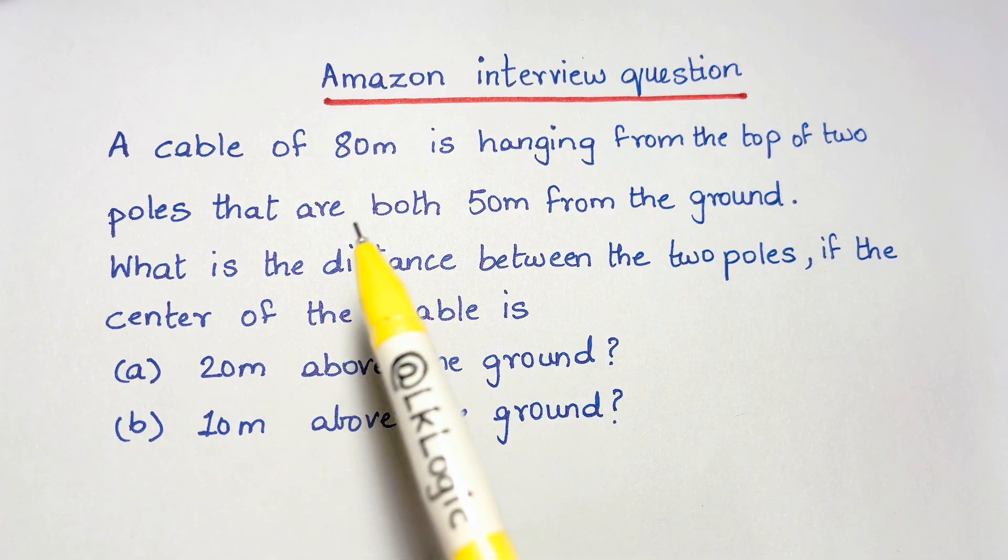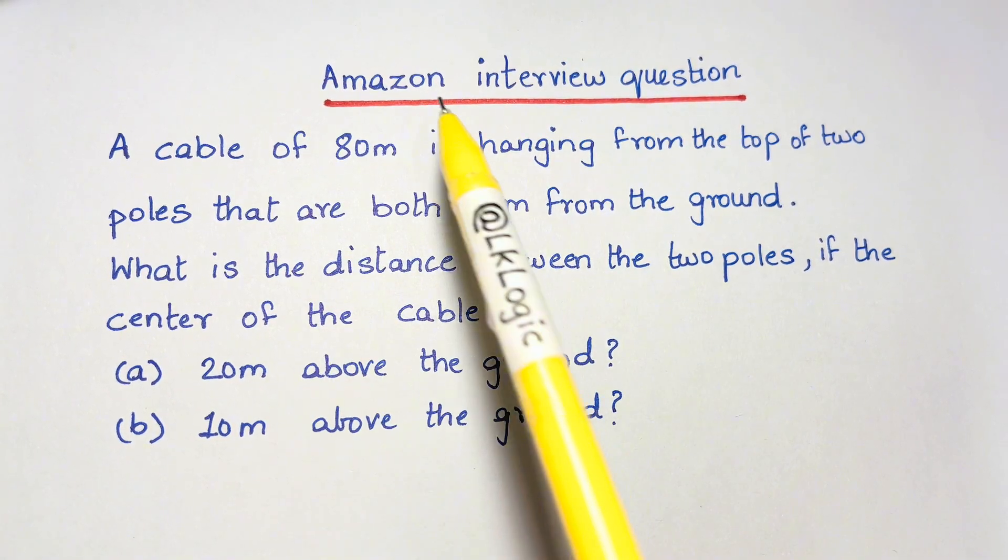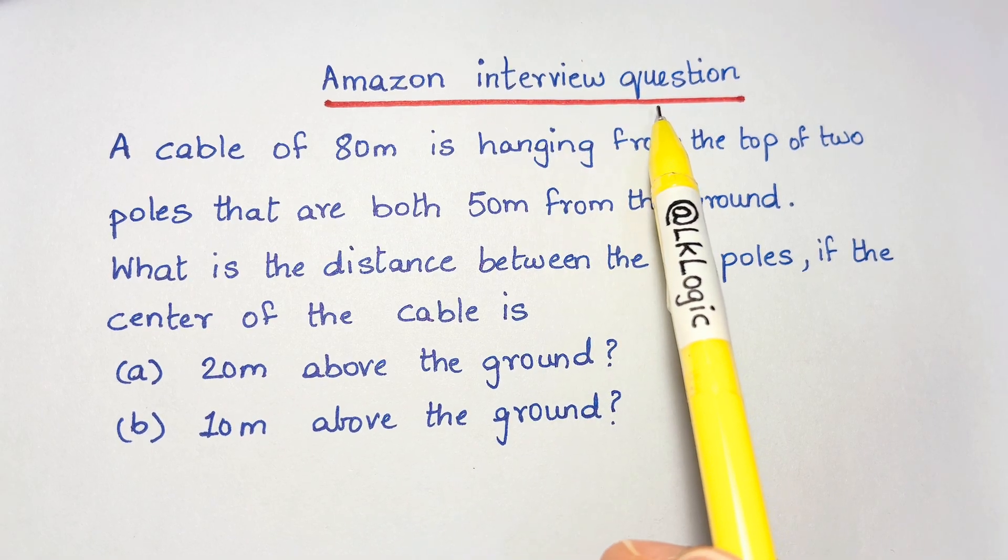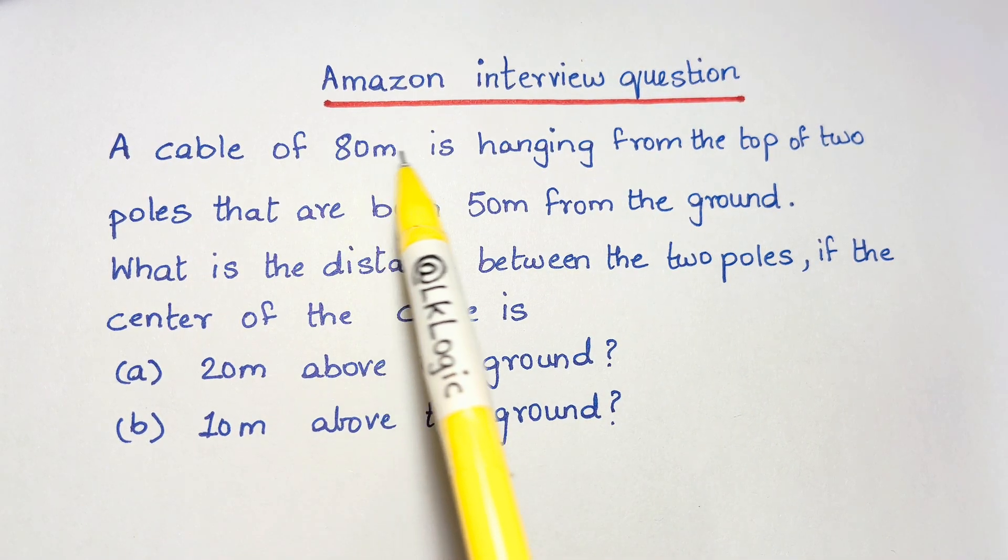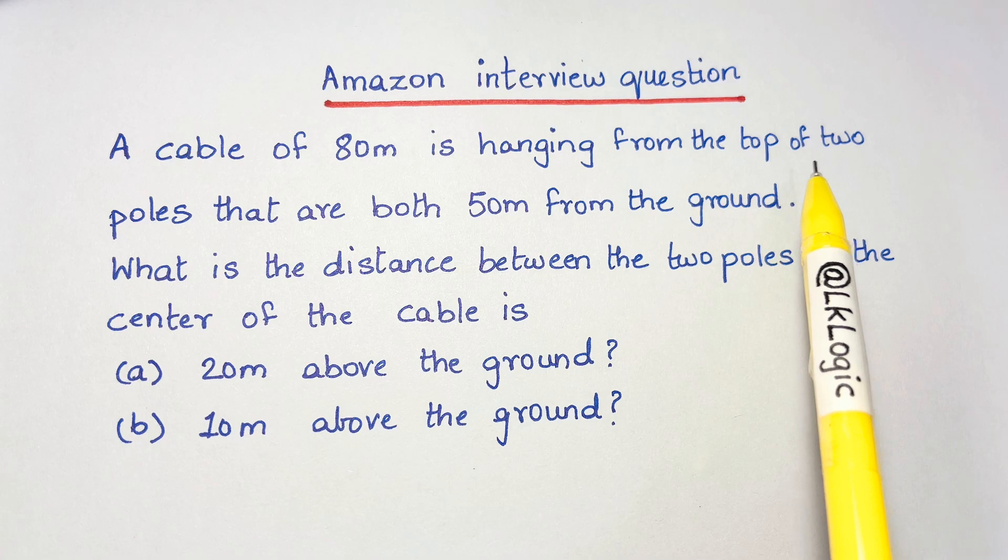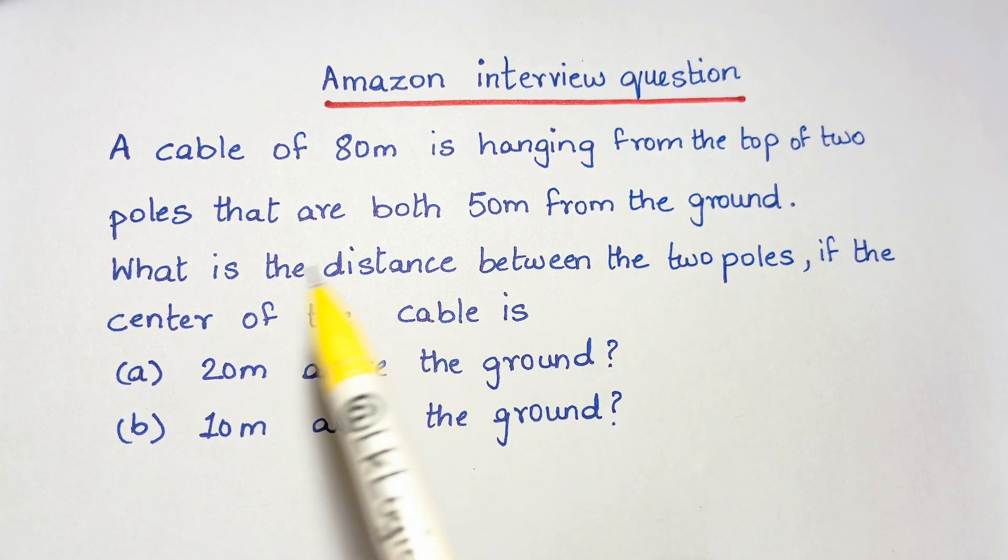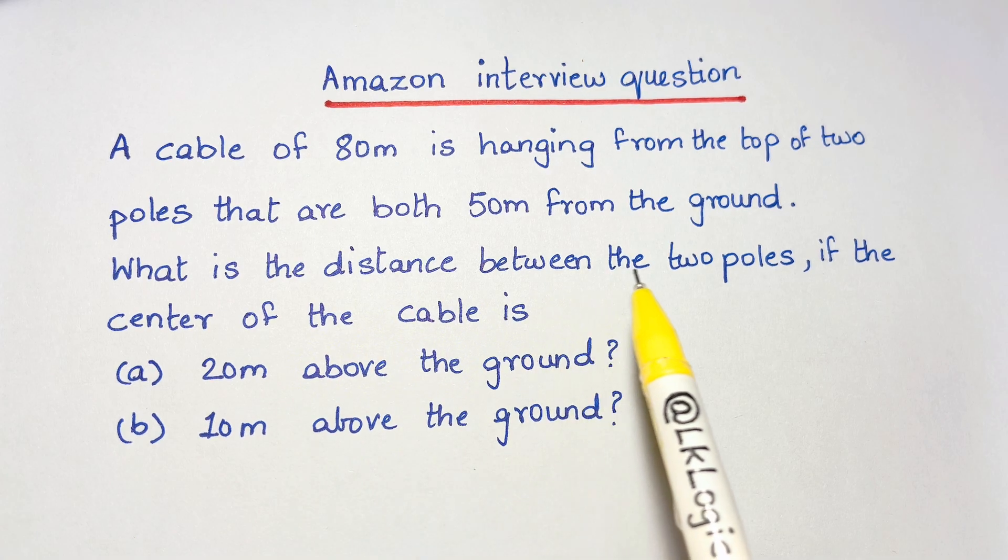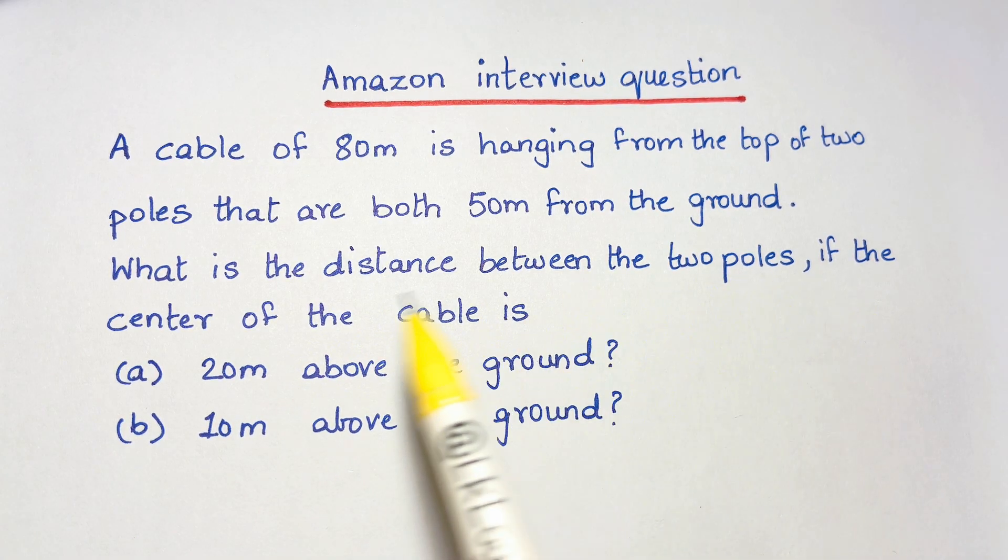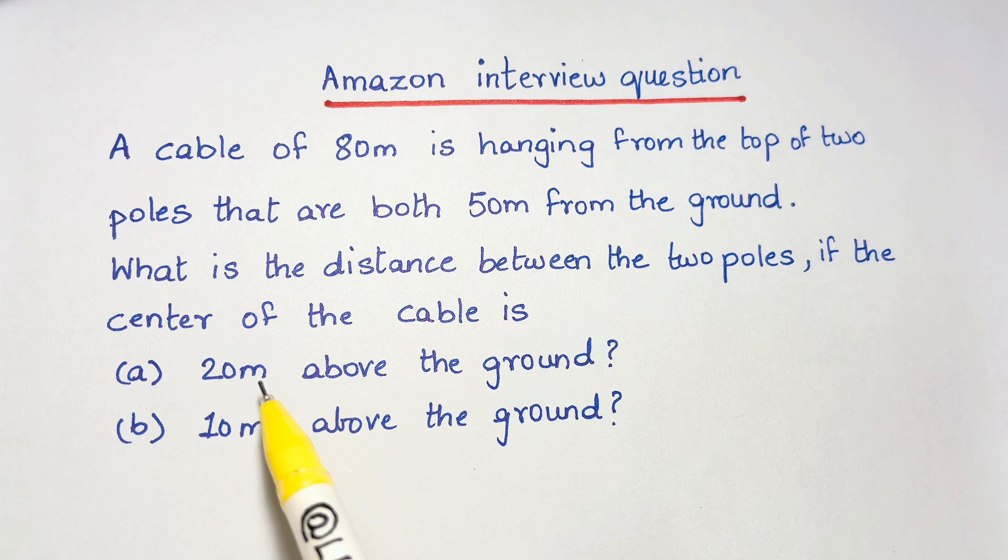Hi guys, it is said that a version of this problem was used as an Amazon interview question. A cable of 80 meters is hanging from the top of two poles that are both 50 meters from the ground. What is the distance between the two poles to one decimal place if the center of the cable is 20 meters above the ground or 10 meters above the ground?